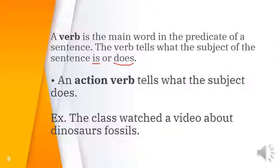An action verb tells what the subject does. For example: 'The class watched a video about dinosaur fossils.' The verb here is 'watched.' It tells an action — what the class did — so 'watched' is an action verb.